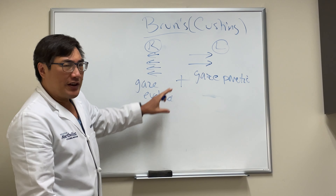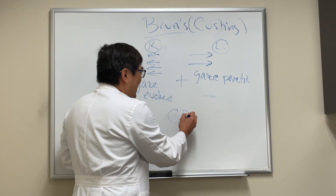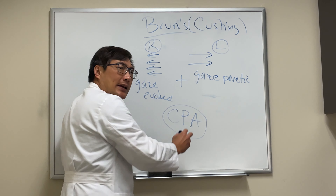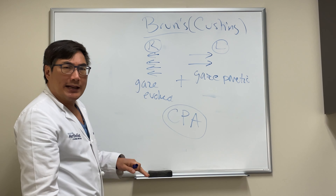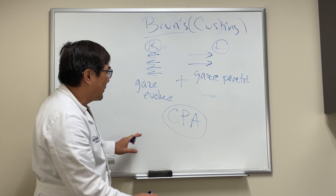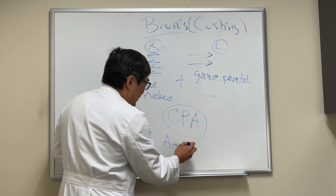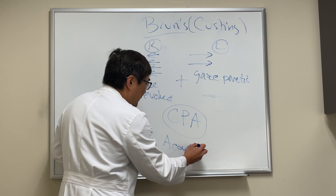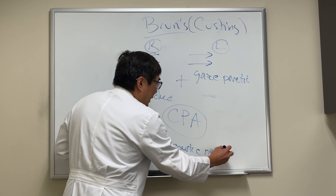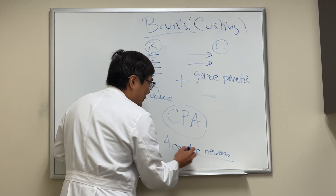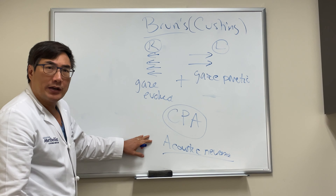It often is seen in cerebellopontine angle lesions, and the most common cerebellopontine angle lesion causing the Bruns-Cushing nystagmus is the acoustic neuroma — vestibular schwannoma. It's often present in patients who have surgery for a vestibular schwannoma.